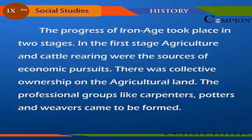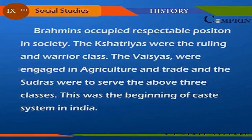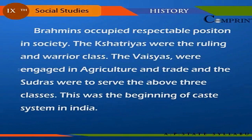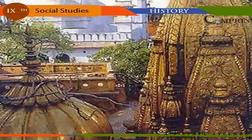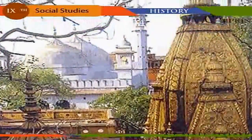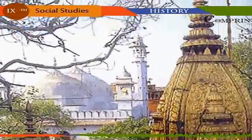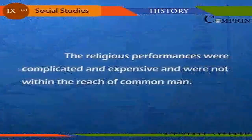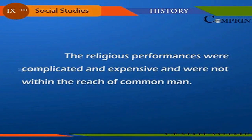Professional groups like carpenters, potters, and weavers came to be formed. Brahmins occupied a respectable position in society; the Kshatriyas were the ruling and warrior class; the Vaishyas were engaged in agriculture and trade; and the Sudras were to serve the above three classes. This was the beginning of the caste system in India.